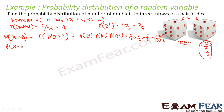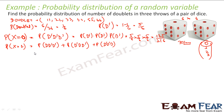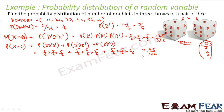For one doublet, the first throw can be a doublet, or the second throw can be a doublet, or the third throw can be a doublet - three options. So P(X=1) is: (1/6 × 5/6 × 5/6) + (5/6 × 1/6 × 5/6) + (5/6 × 5/6 × 1/6), which gives 75/216.